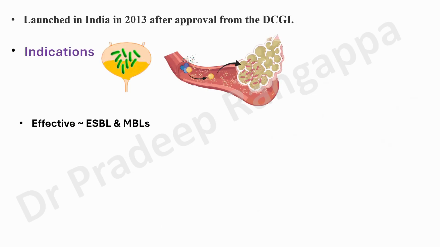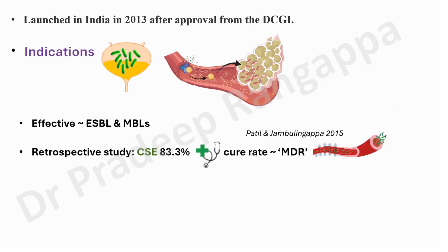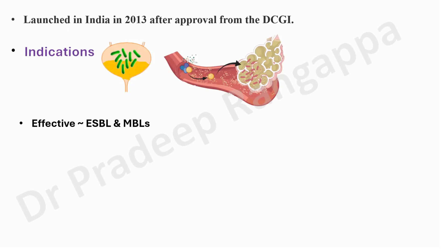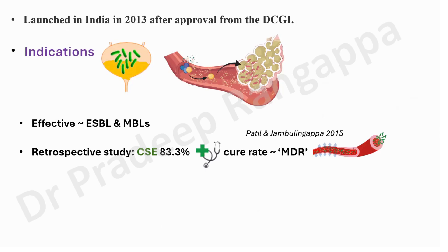It is looked at as a carbapenem-sparing drug. If you search for evidence, you won't find large randomized controlled trials comparing it to carbapenems — only case series and a few retrospective studies. Two studies can be cited for this drug's use, both from India. One is a retrospective study published in 2015 showing 83.3% clinical cure rate in MDR sepsis.